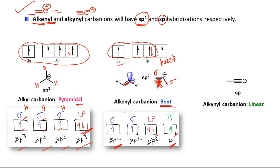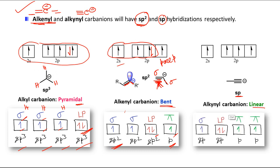For an alkynyl carbanion, the negative charge is on a carbon that is part of a triple bond — the shape is linear. It is sp hybridized. Carbon has 4 valence electrons plus one extra. One s and one p orbital undergo hybridization to give 2 sp orbitals: one sp forms a sigma bond with the R group, and the other sp carries the lone pair. The two pure p orbitals (not hybridized) participate in the two pi bonds of the triple bond.